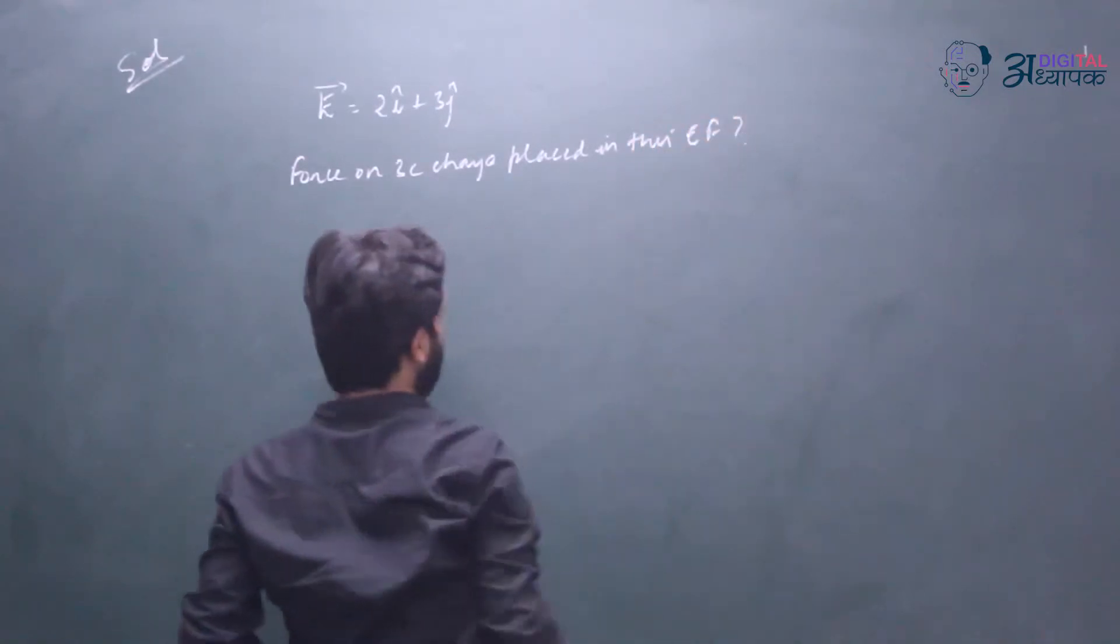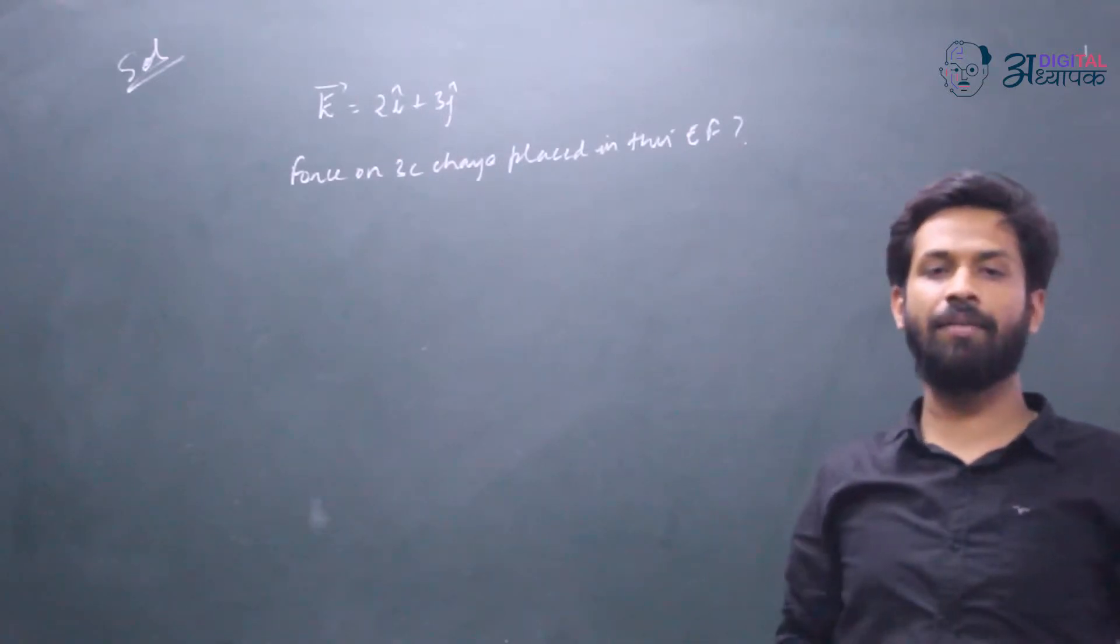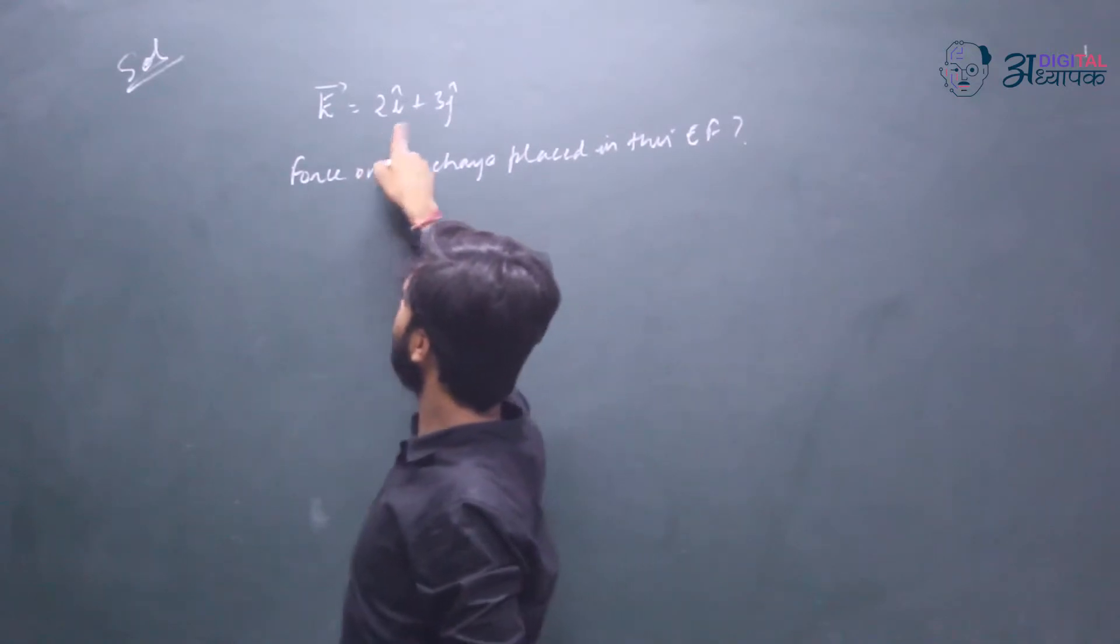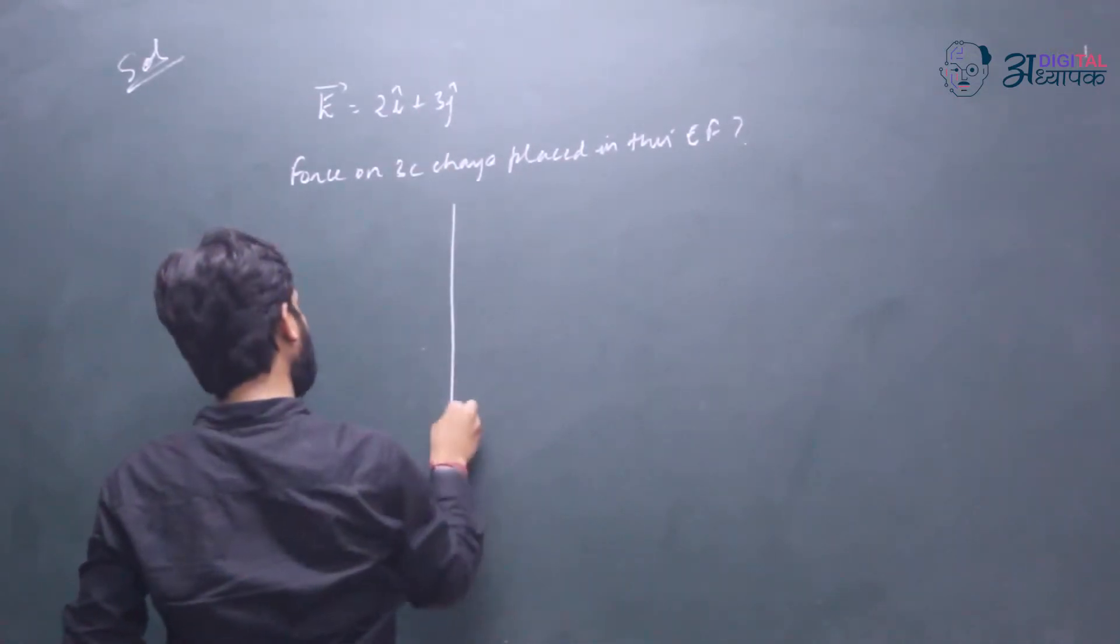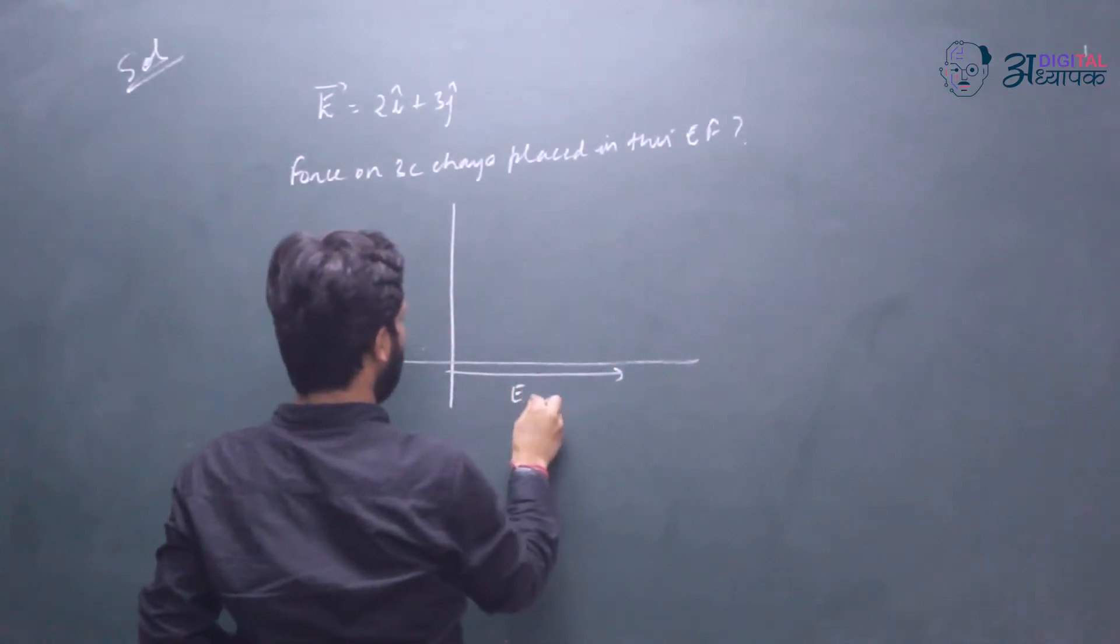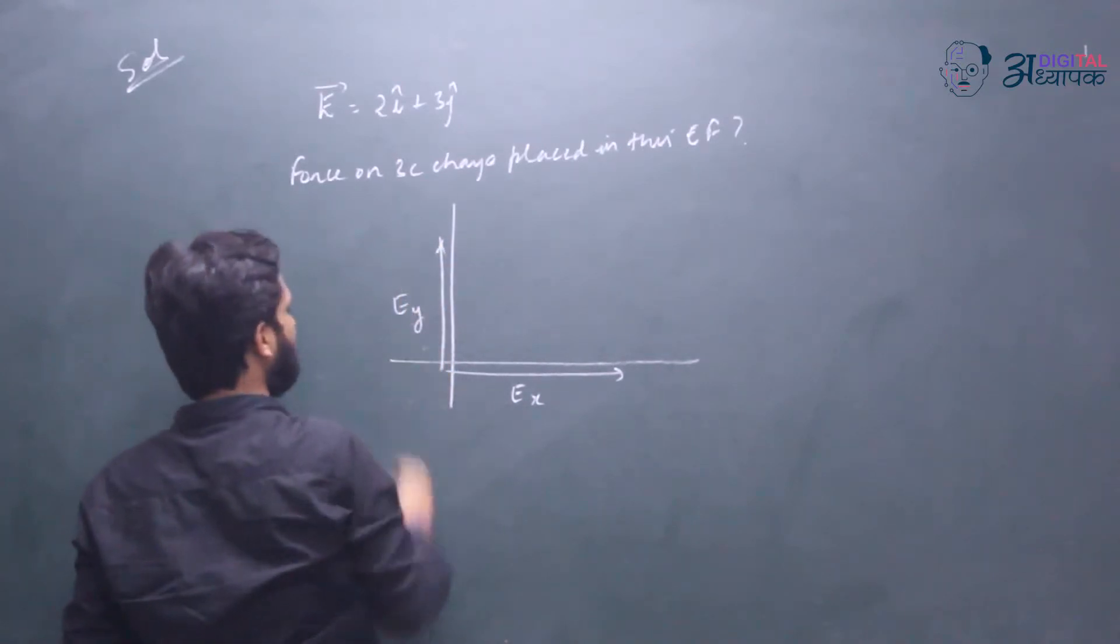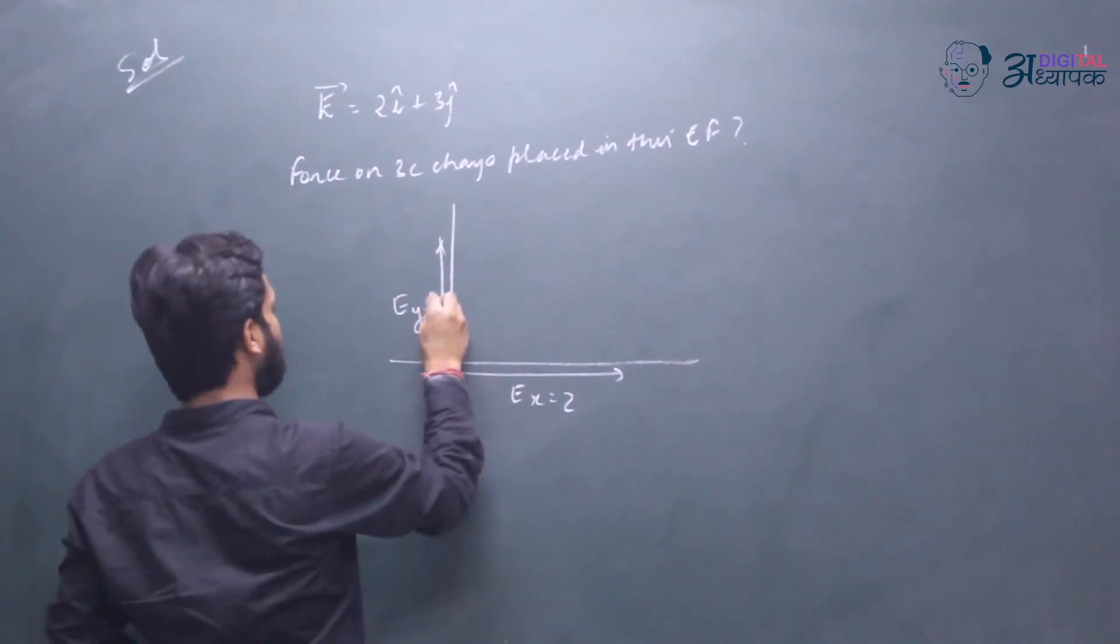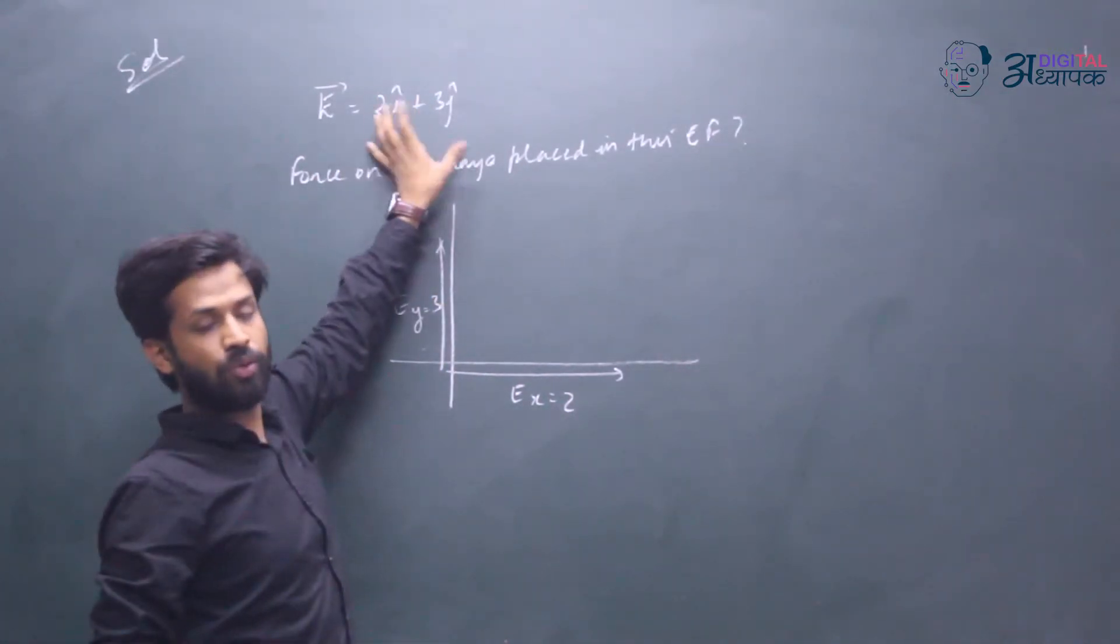First, many children are scared of the i cap and j cap notation, but it is very simple. I am very comfortable with i cap and j cap. Electric field 2i cap plus 3j cap means that the electric field is in two directions on the plane - the x direction has a component of 2 and the y direction has a component of 3. If we solve the problem in a very simple way, we will solve it with the vector components.